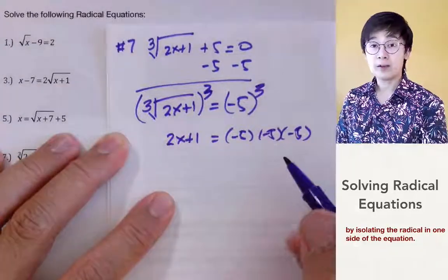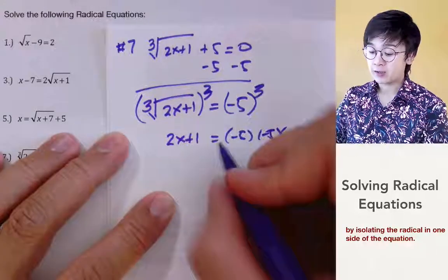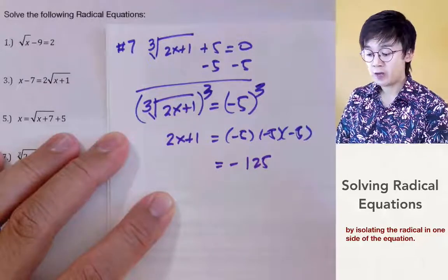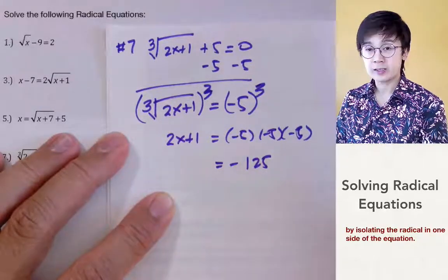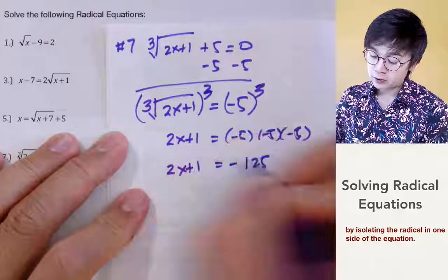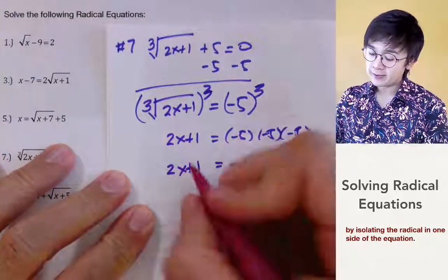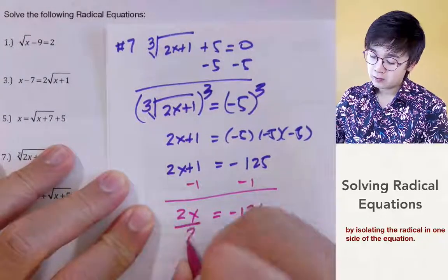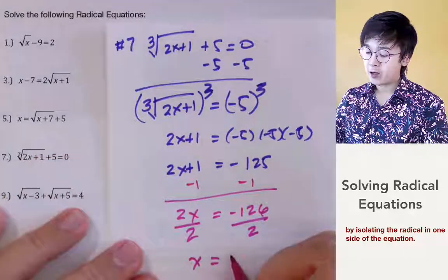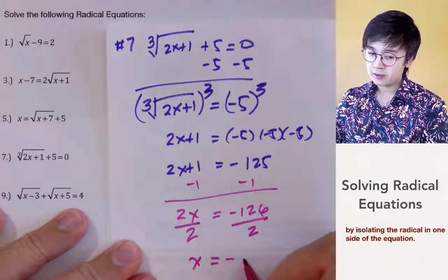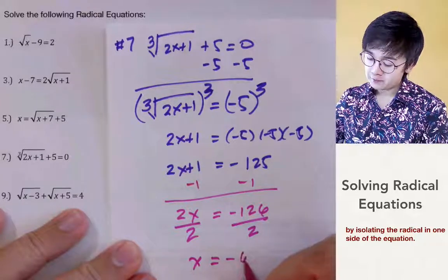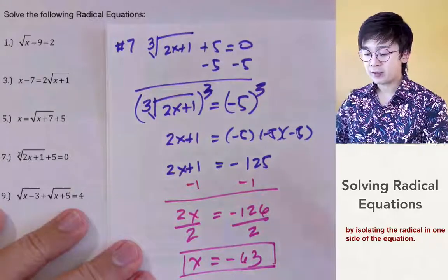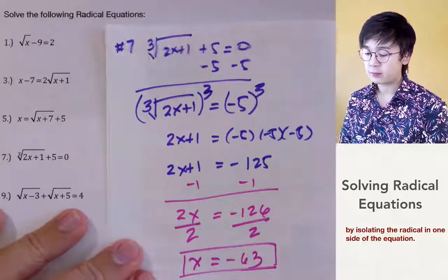Cubing both sides: 2x plus 1 equals negative 5 cubed. Since negative 5 times negative 5 is positive 25, and positive 25 times negative 5 is negative 125, we have 2x plus 1 equal to negative 125. Solving for x, we subtract 1 and divide by 2, giving x equal to negative 63. We don't need to verify since we only have one solution for this equation.